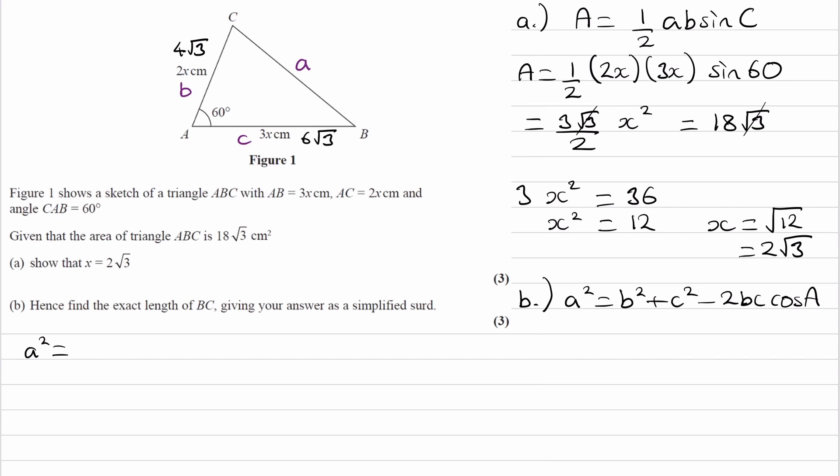So then a² is equal to b². So 4√3 squared plus 6√3 squared minus 2bc cos a. 2 times b, which is 4√3, and then times by c, which was 6√3, and finally by cos of 60.